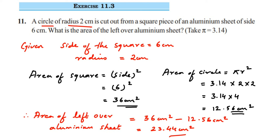So 23.44 centimeter square is the area of the leftover aluminum sheet. We found the area of the square, got the area of the circle, and then subtracted it. I hope this is clear. In case you have further questions or doubts, you can drop a comment below. Thank you so much for watching.